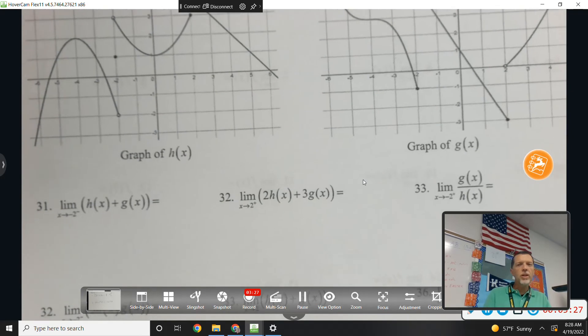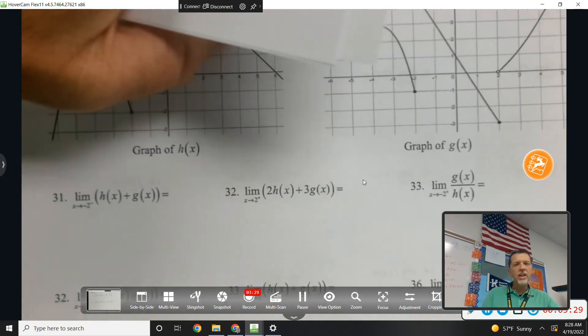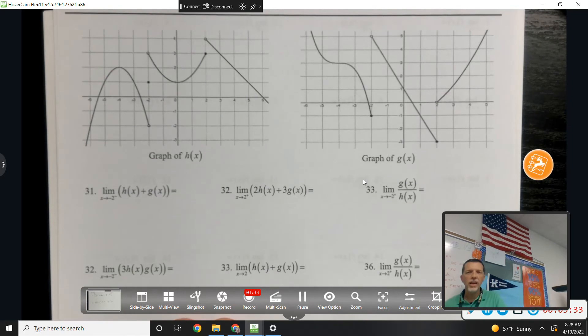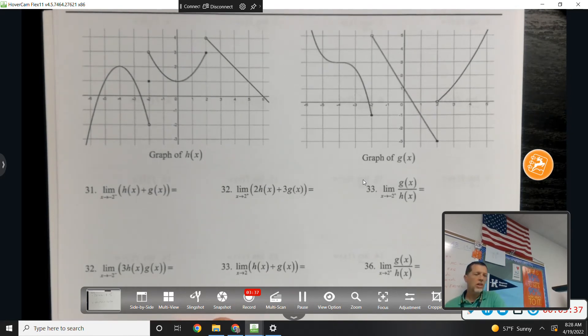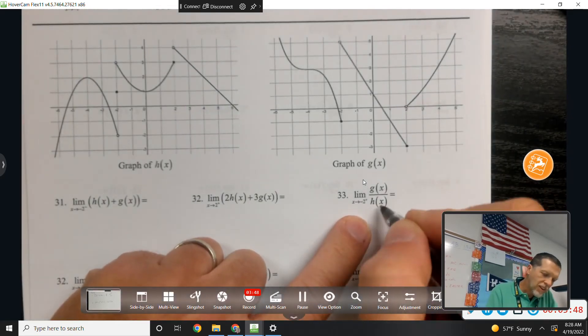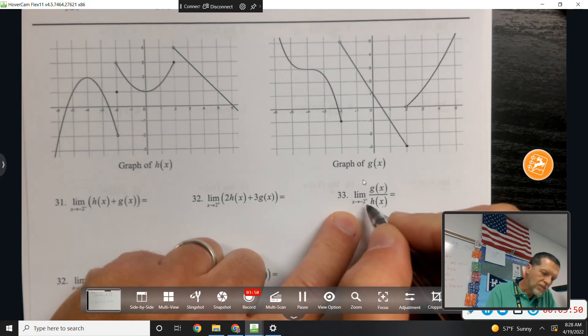31 through 36, we didn't do any exactly like this, but it's just adding or subtracting or multiplying the various limits. Do I need to do any of those? Tori? 33.